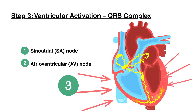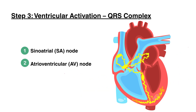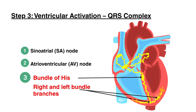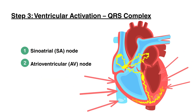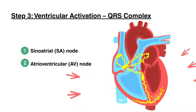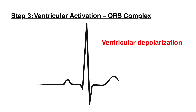Step 3: Ventricular Activation and the QRS Complex. After the delay, the impulse travels through the bundle of His, down the right and left bundle branches, and into the Purkinje fibers. This spreads the signal quickly through the ventricles, causing them to contract. This rapid depolarization of the ventricles appears on the ECG as the QRS complex.